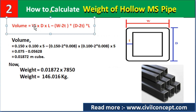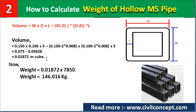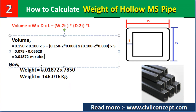Substituting the values: width = 0.150 m, depth = 0.100 m, length = 5 m, and then (W − 2T) × (D − 2T) × L with length = 5 m again. After calculating, the first term gives 0.075 and the second term gives 0.05628, resulting in a total volume of 0.01872 cubic meters.